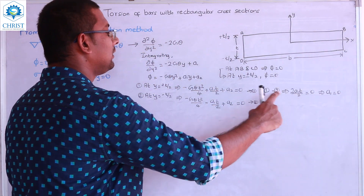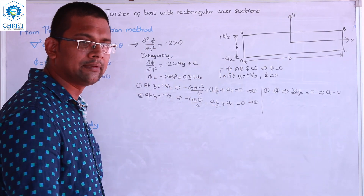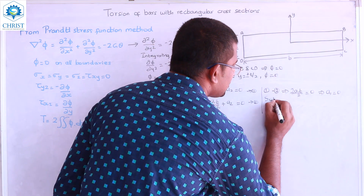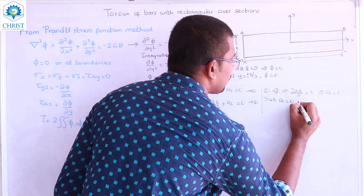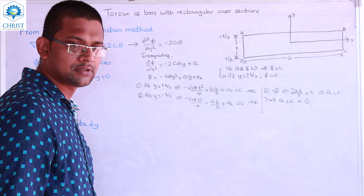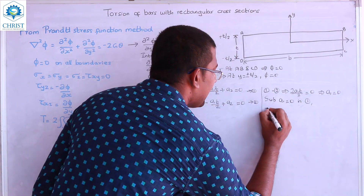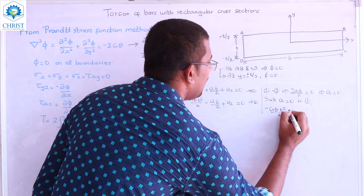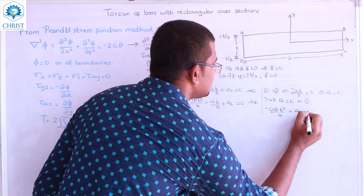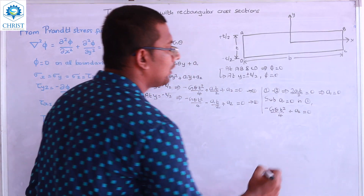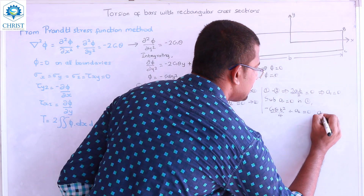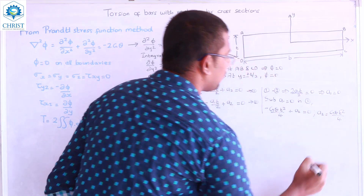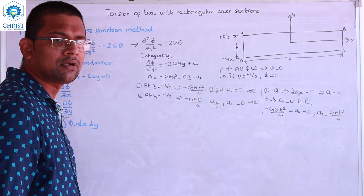Now substituting A1 equals 0 into equation 1: minus Gθ·T²/4 plus A2 equals 0. Therefore A2 equals Gθ·T²/4. That is the expression for A2.